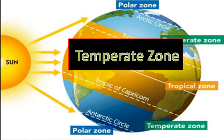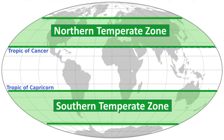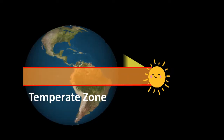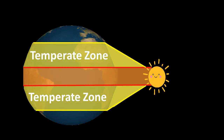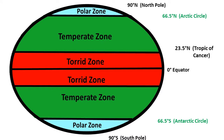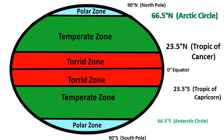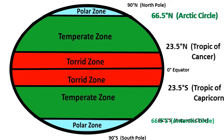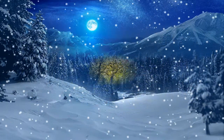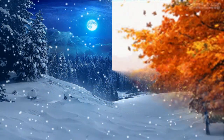Next, we have the temperate zone. There are two temperate zones — one in the northern hemisphere and the other in the southern hemisphere. The temperate zone receives the slanting rays of the sun and therefore it is neither very hot nor very cold. The northern temperate zone lies between the Tropic of Cancer and the Arctic Circle, and the southern temperate zone lies between the Tropic of Capricorn and the Antarctic Circle. The climate in these zones is moderate or temperate, and this zone is the largest among all the climate zones.